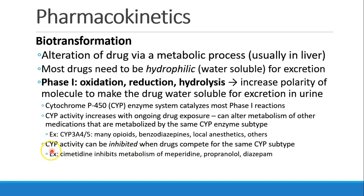Patients can also have inhibition of their cytochrome P450 system. This might happen when you overload the system by giving more than one drug, all competing for the same cytochrome P450 subtype. One example is cimetidine — an H2 antagonist, similar to ranitidine, which we don't use very often anymore. It can inhibit the metabolism of other drugs like meperidine or diazepam, making those drugs seem to have more effect.